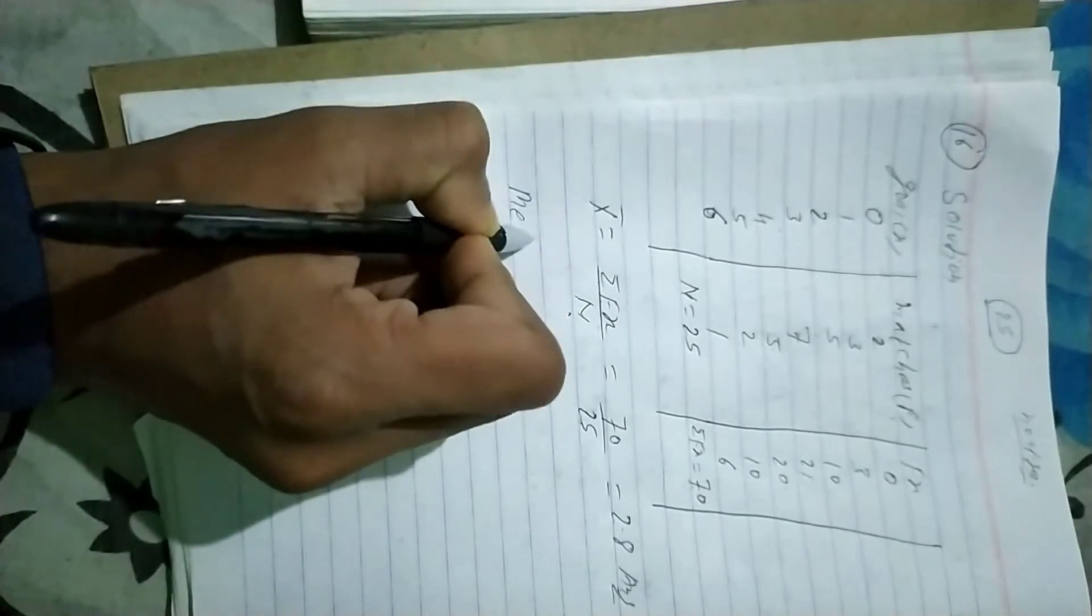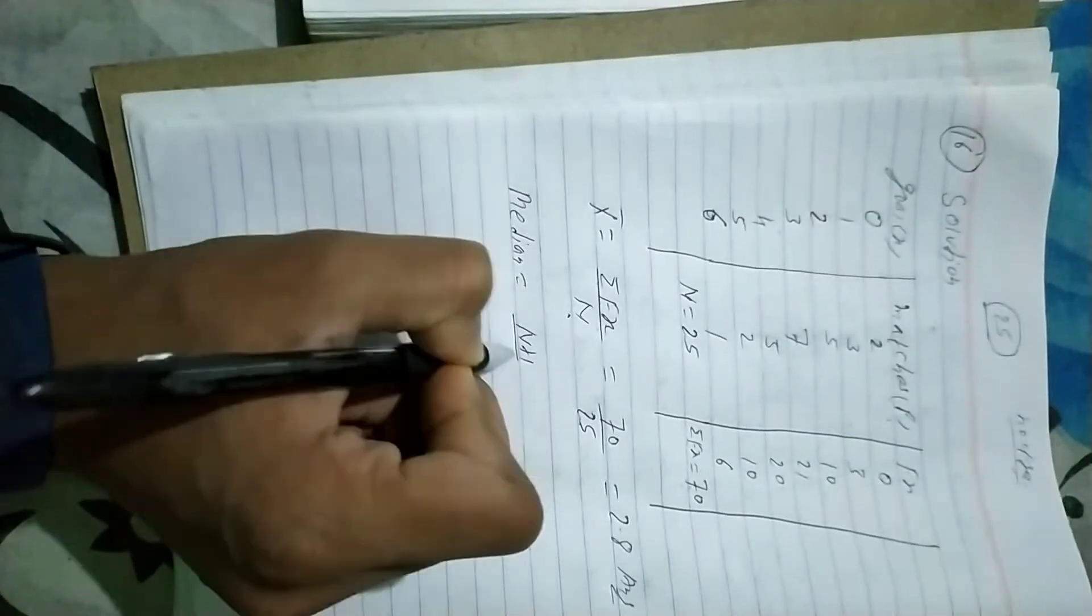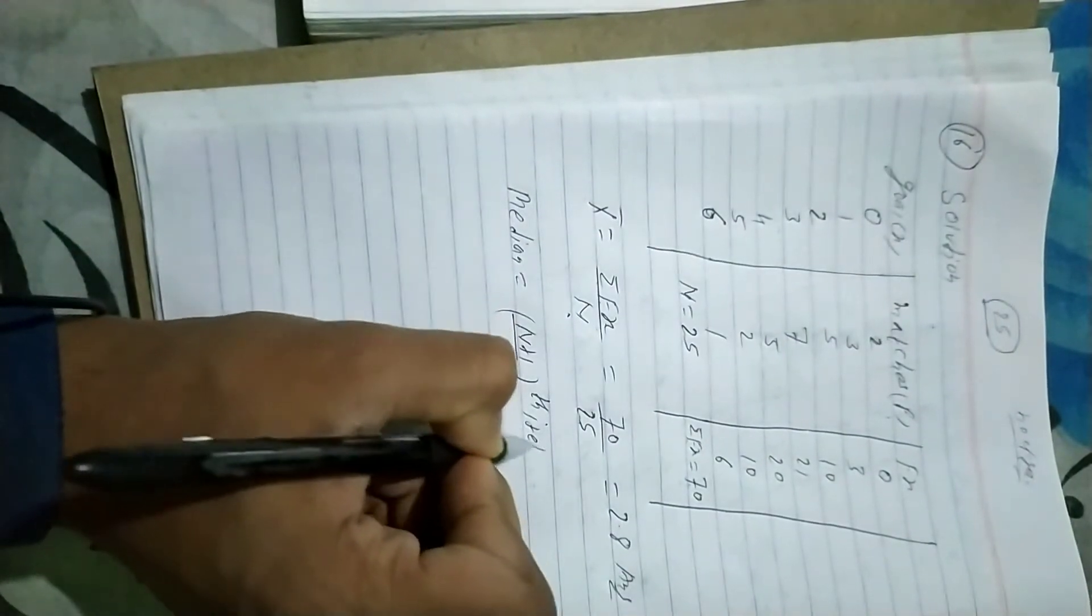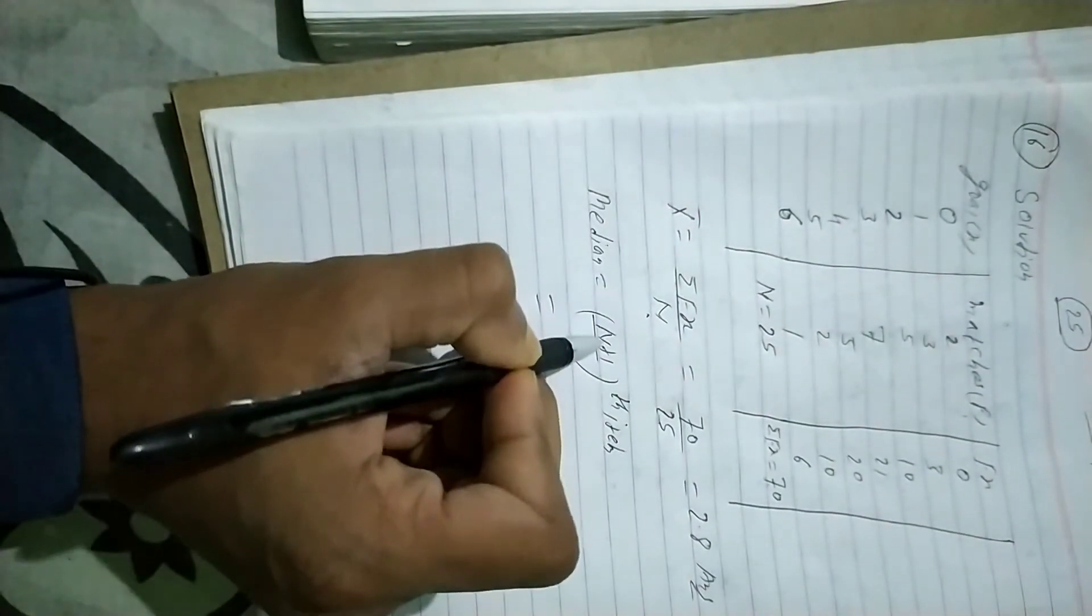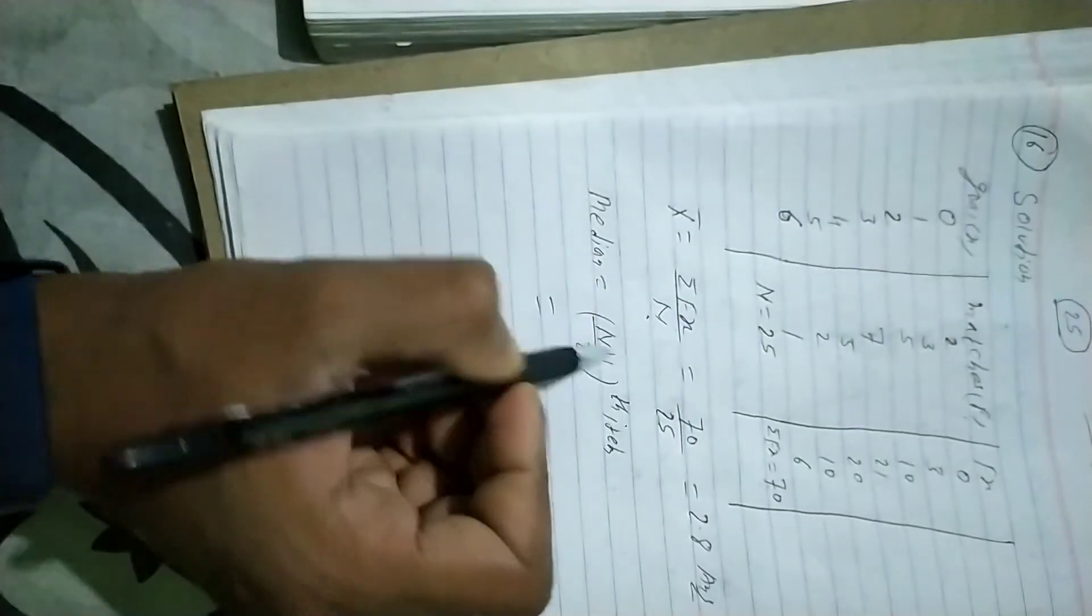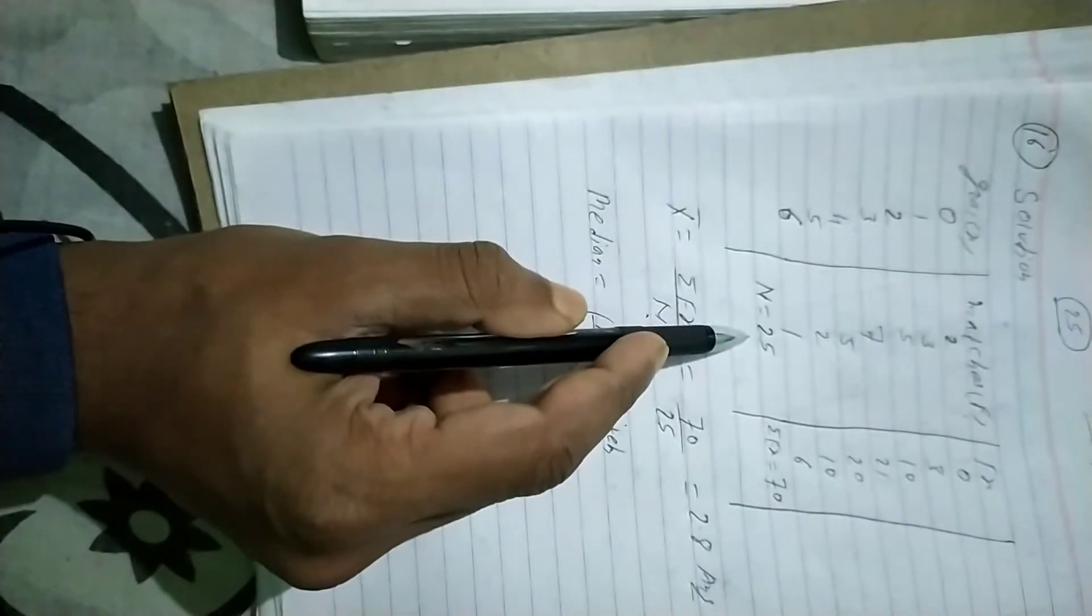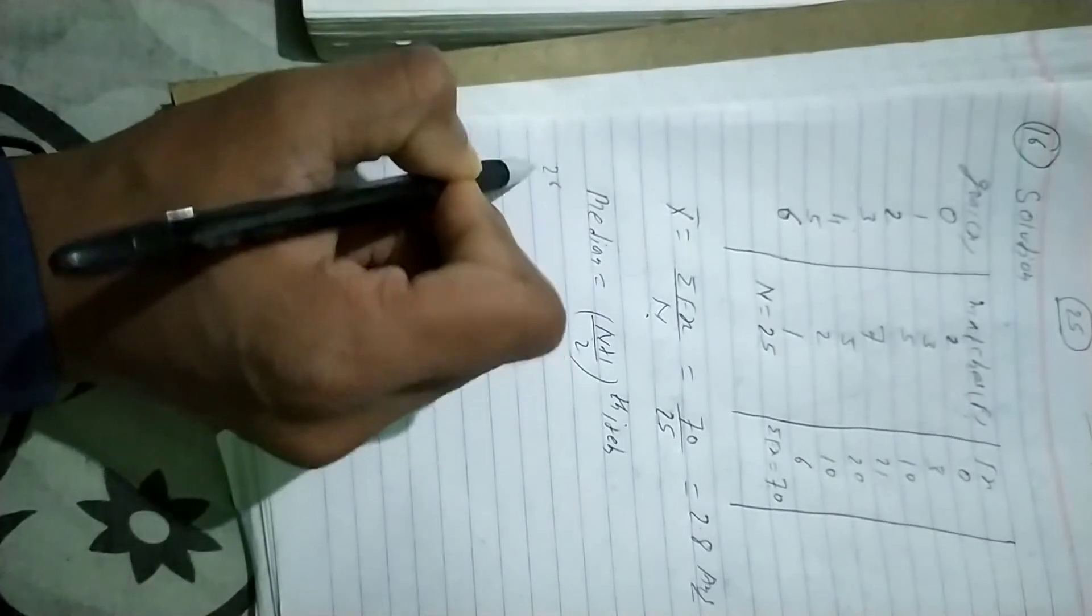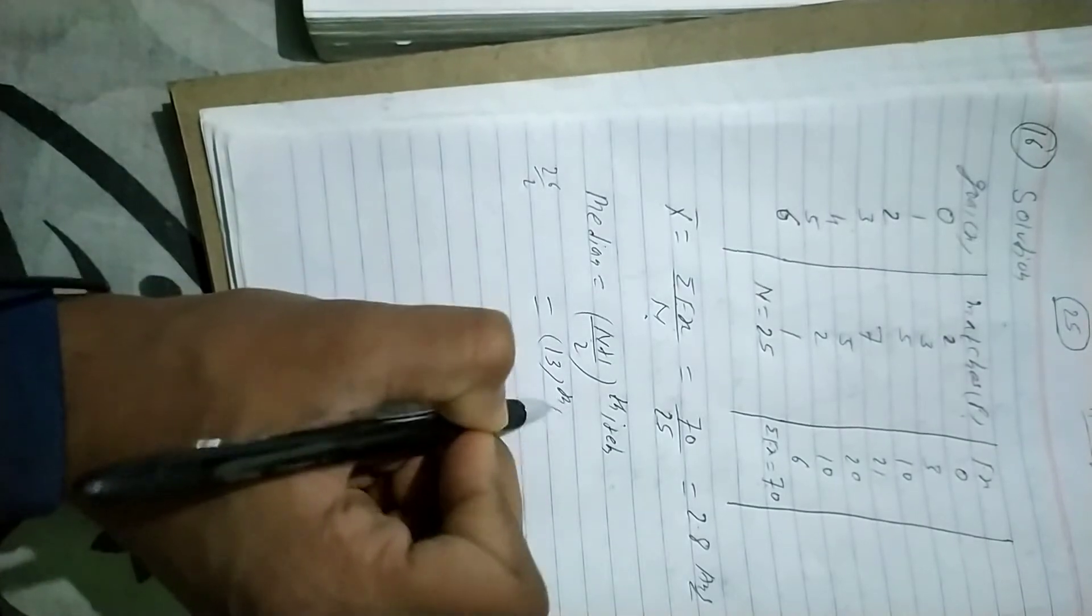Now for the median, the formula is n plus 1 divided by 2, which gives us the item position. So 25 plus 1 is 26, divided by 2 is 13. We need to find the 13th item.